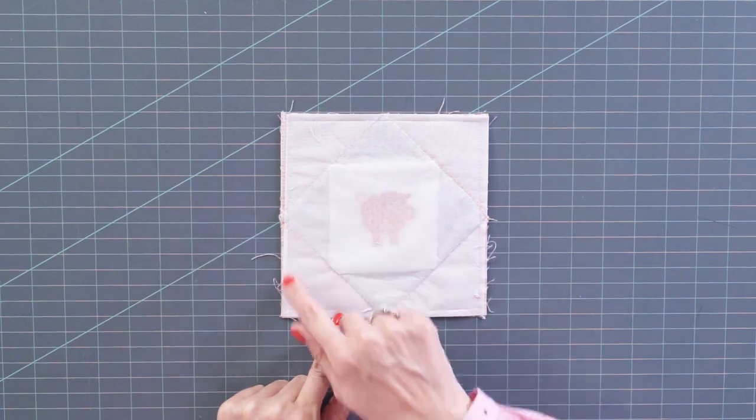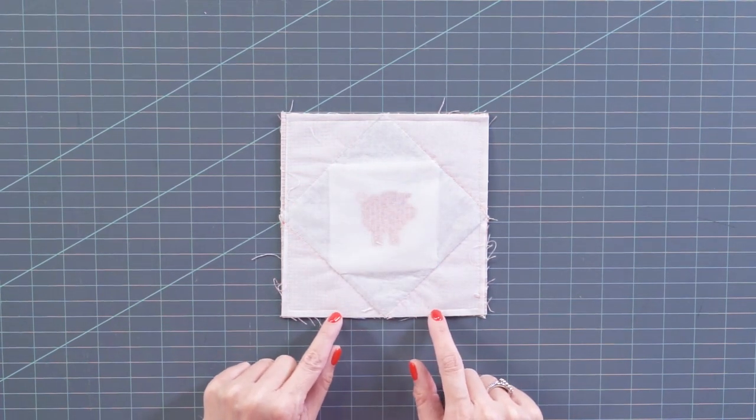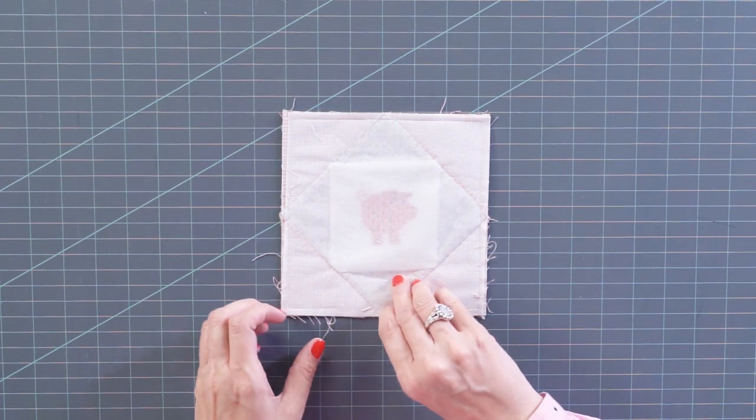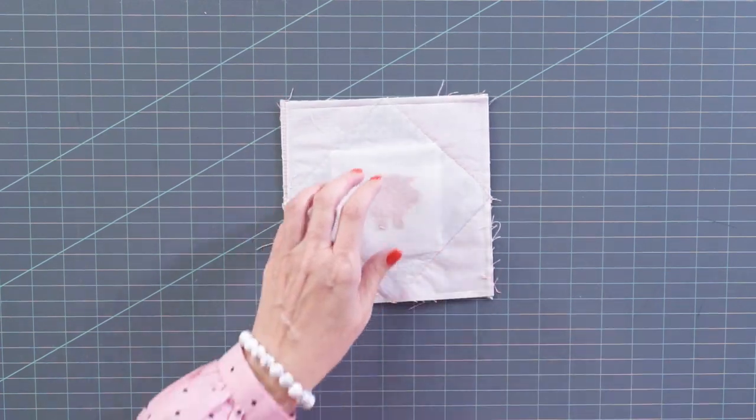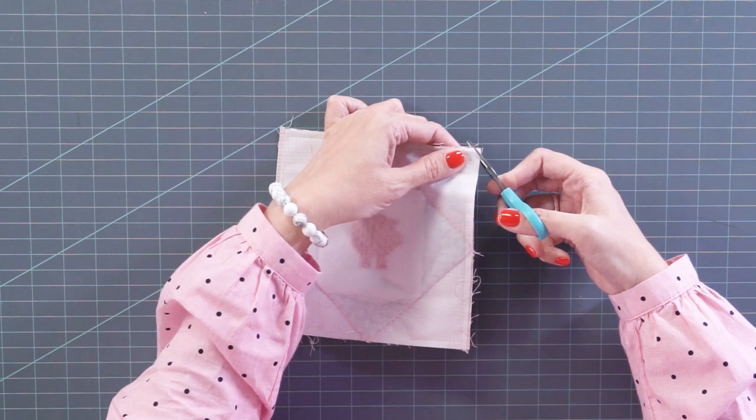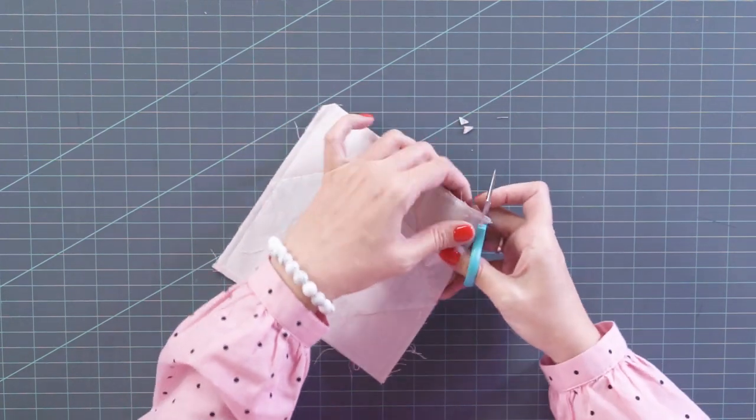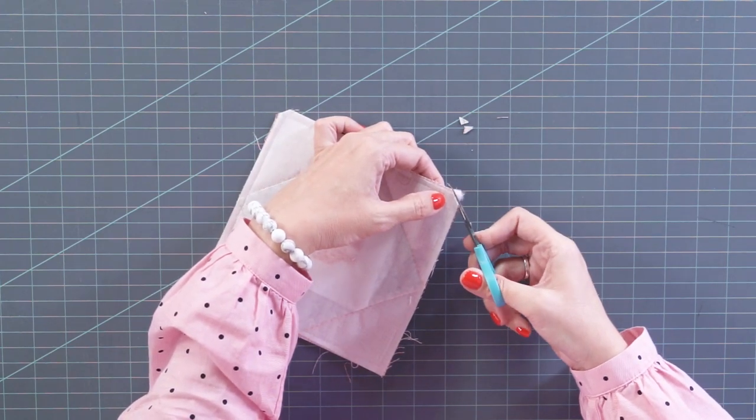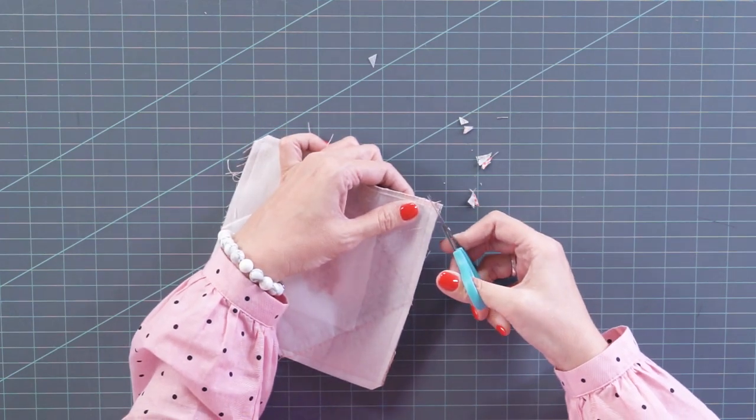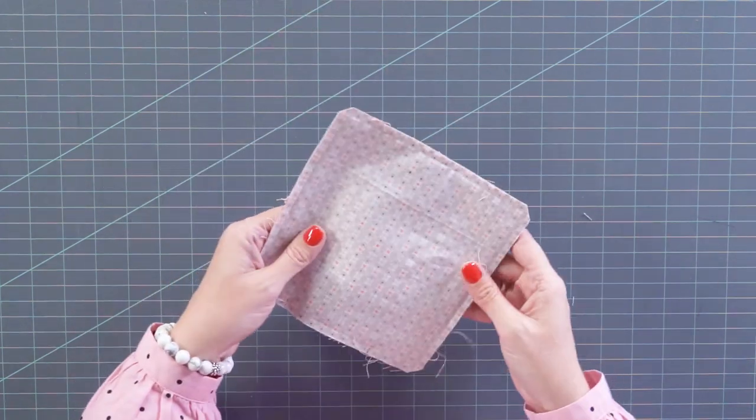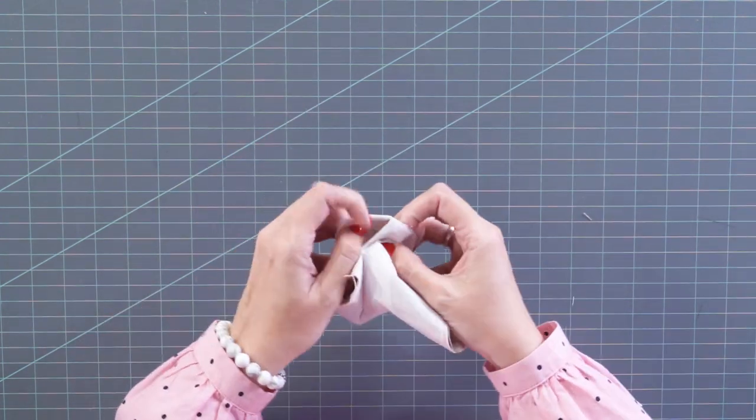I sewed around the outside, and again, I left a three inch gap. When I started and stopped, I did use a back stitch because we're gonna put some pressure on those seams slightly. So we want to turn this right side out, but first, I'm gonna clip the corners slightly. You don't wanna clip to the stitches, just a little bit past the stitches, and that's gonna help your corners come out a little bit nicer.